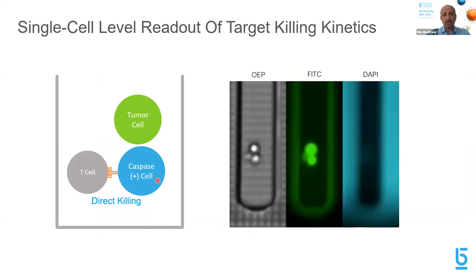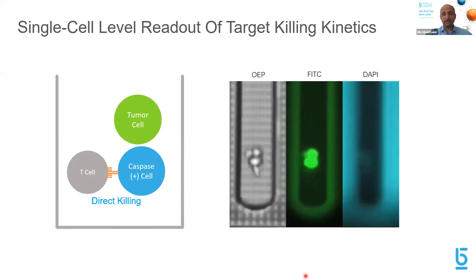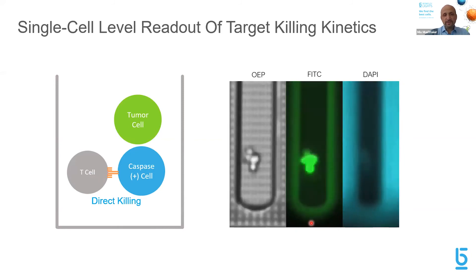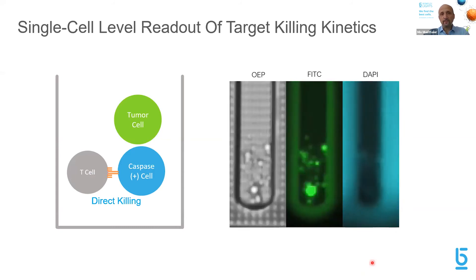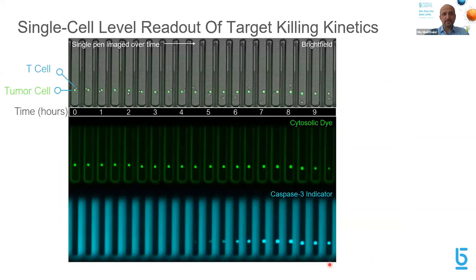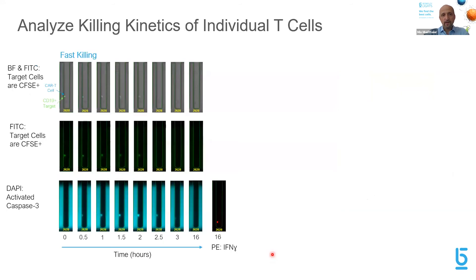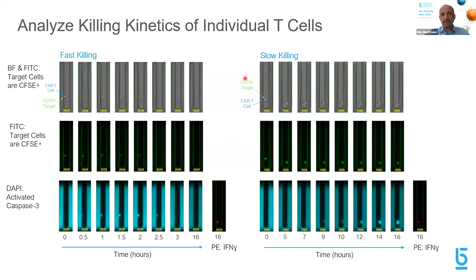Two tumor cells demonstrate that only the tumor cell directly interacting with the T cell is killed while the other remains unharmed. Interestingly, a very rare phenotype is observed where the tumor cell seems to explode in a burst across the nano well — it would be interesting to selectively export this T cell compared to one that only induces regular apoptosis. Using time-lapse images and caspase activity, fast versus slow killing T cells can be differentiated: a fast killing T cell kills a tumor cell after one and a half to two hours, while a slow killing one needs 14 to 16 hours.